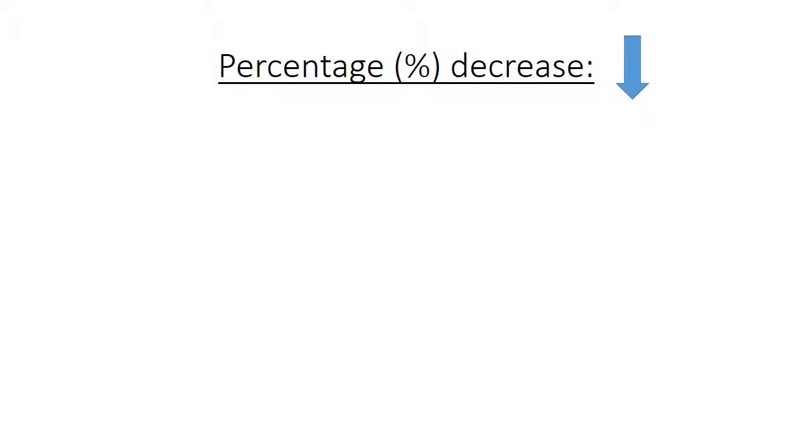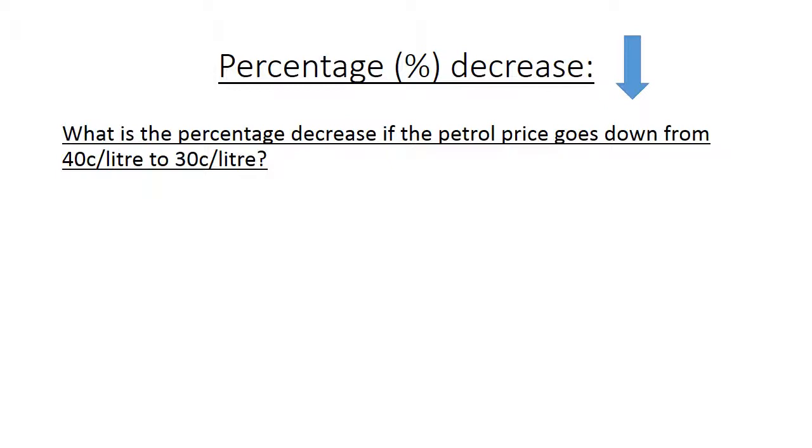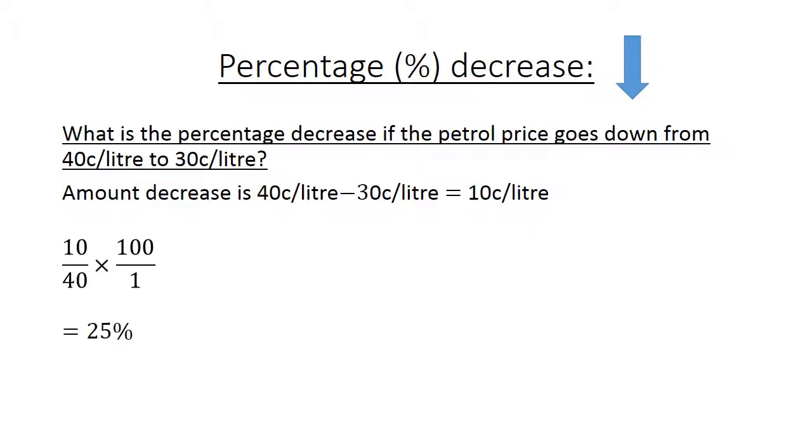Percentage decrease means it is going down. What is the percentage decrease if the petrol price goes down from 40 cents per litre to 30 cents per litre? The amount decrease is 40 cents per litre minus 30 cents per litre, which equals 10 cents per litre. So 10 over 40 times 100 over 1 equals 25%.